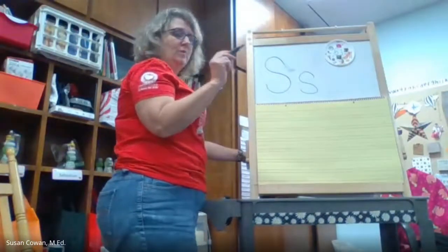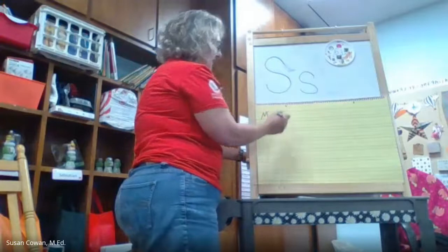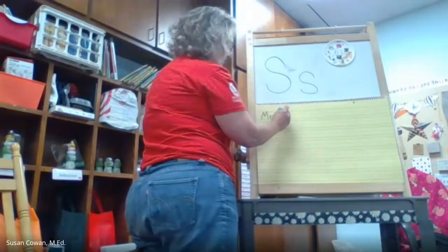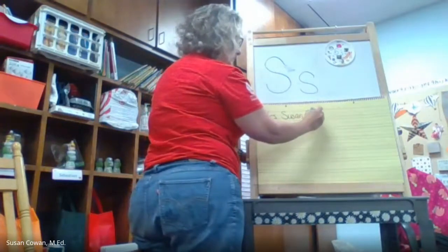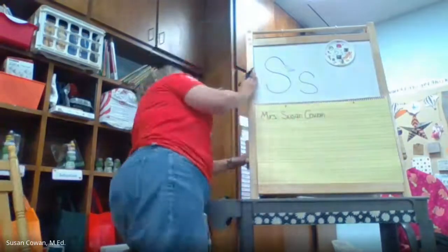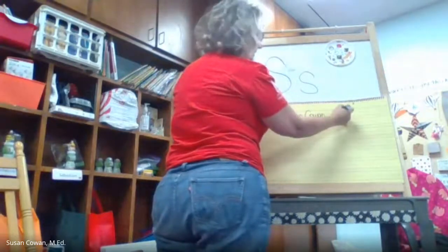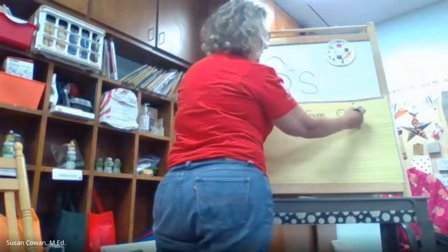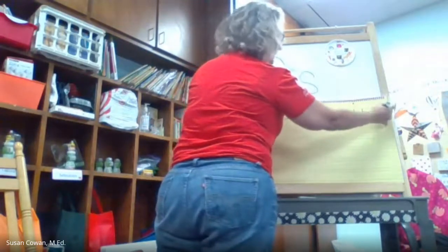The first thing we do is always the same — you pick up your pencil and you write your name. My name is Mrs. Since we're doing S today and my first name is Susan, I'm going to put that on there too. Susan Cowan. And today is October 26th. What does October start with? O, C, T, O, B, E, R — 26. You're right.